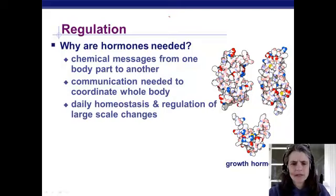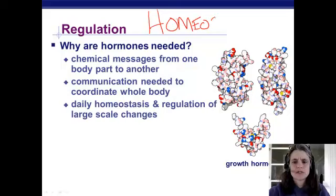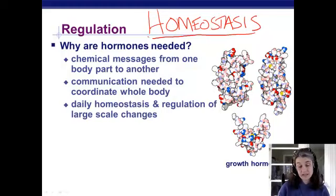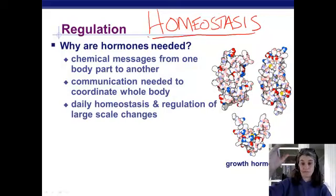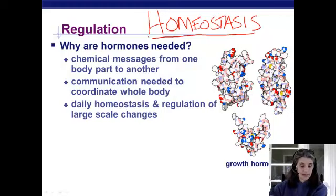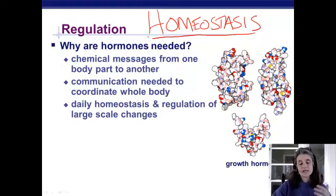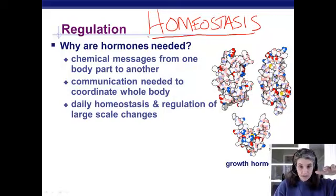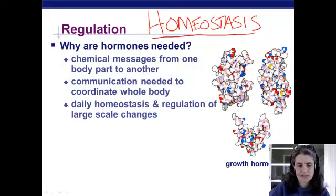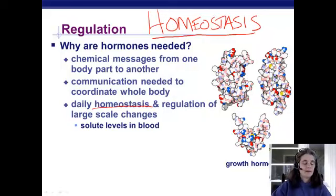Homeostasis is a really important concept — all body systems exist to help an organism maintain homeostasis. We talked about body temperature, pH, and many other things we need to keep level. The endocrine system is the crowning system for maintaining homeostasis; many hormonal cycles are geared toward monitoring body levels, and if something gets too high we bring it down, if too low we bring it up.